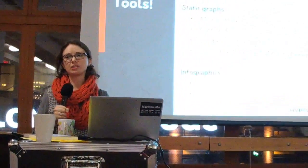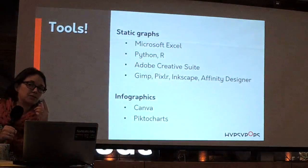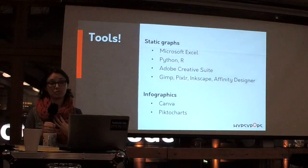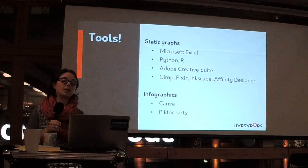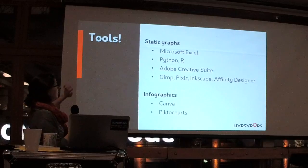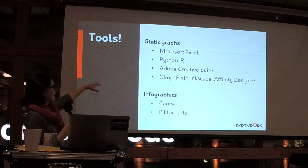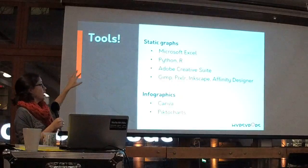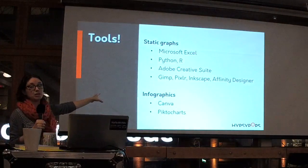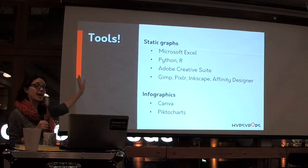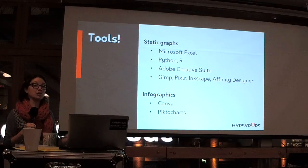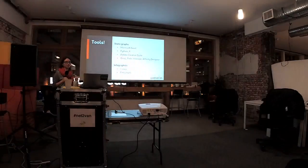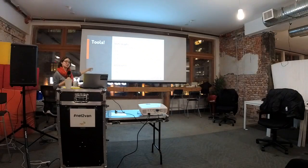All of these slides are going to be available for download through Eli, but I also have them on my website — so don't feel obligated to copy them all down right now. You're familiar with Excel. Python and R are statistical programming languages — Python tends to be used more by industry, and R tends to be used more by academia. So if you've decided in 2017 you're going to learn a statistical programming language, choose wisely.